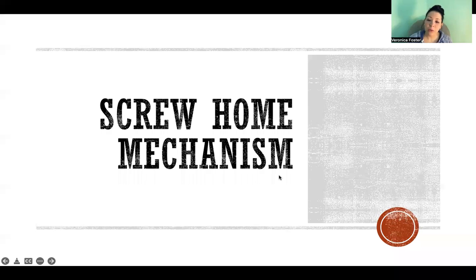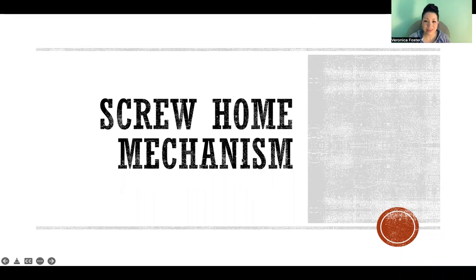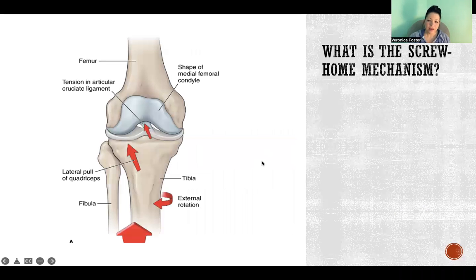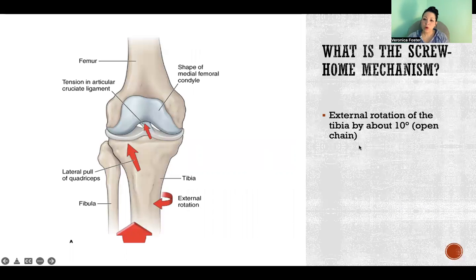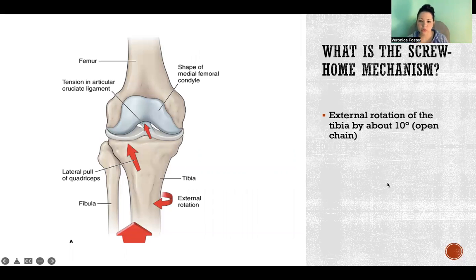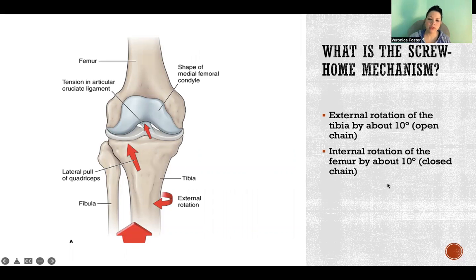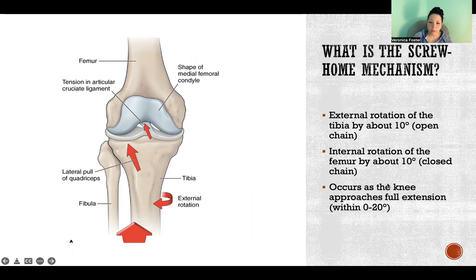Hello, in this video I'm going to talk about the screw home mechanism of the knee. The screw home mechanism refers to the rotation that takes place between the tibia and the femur when the knee is approaching full extension.